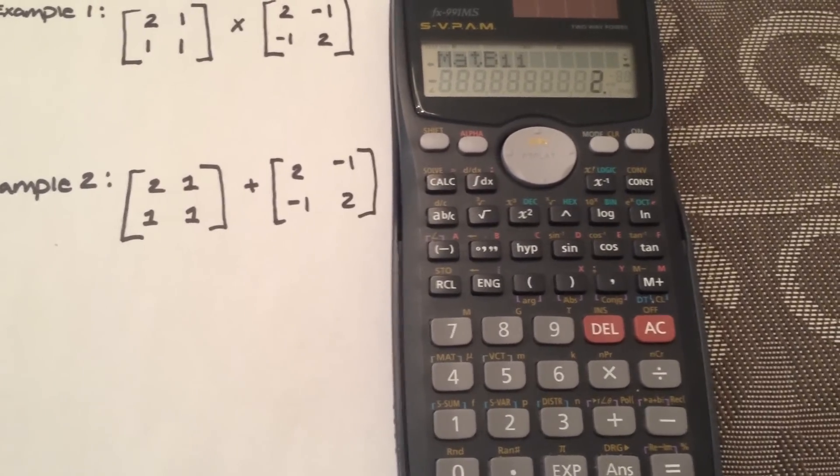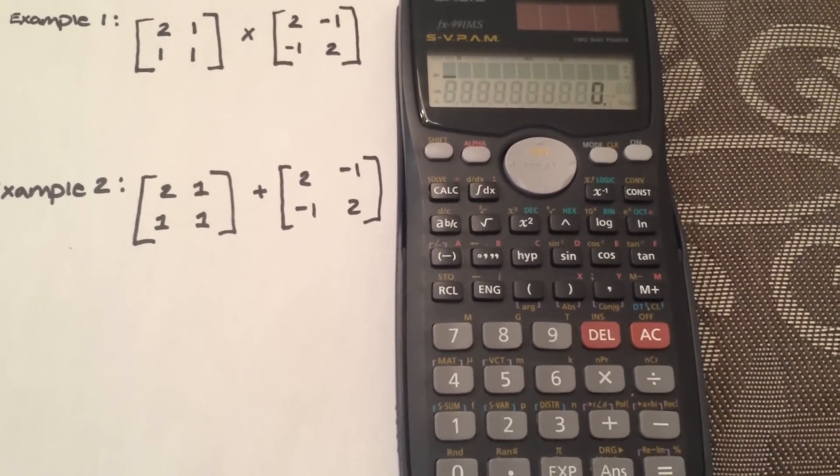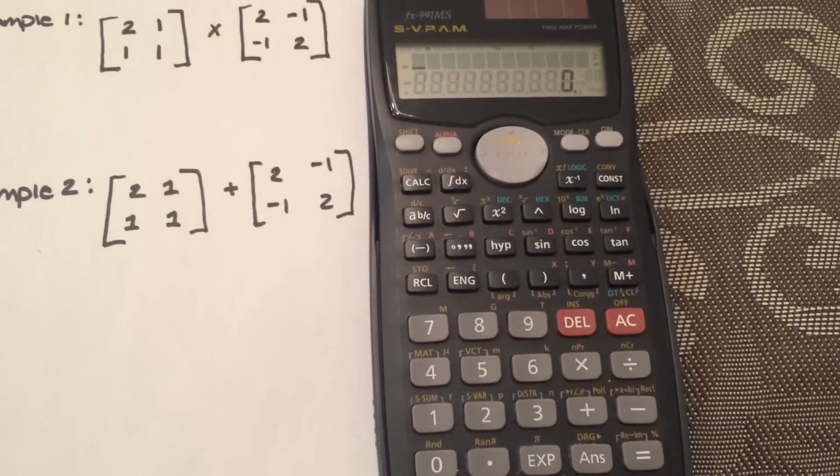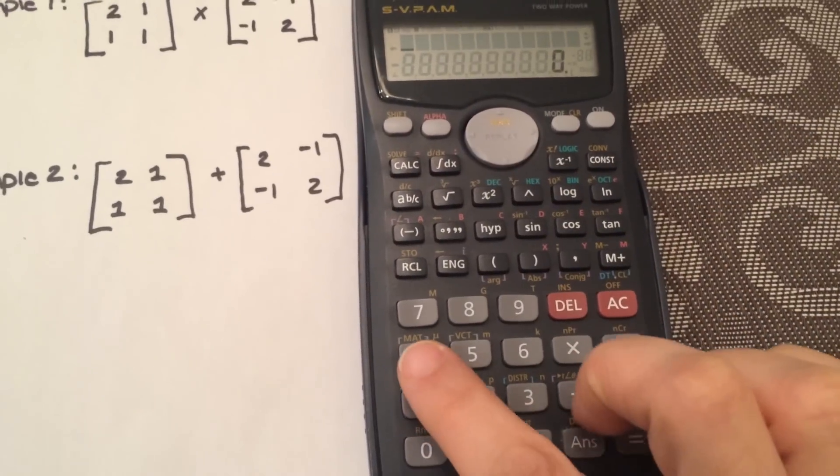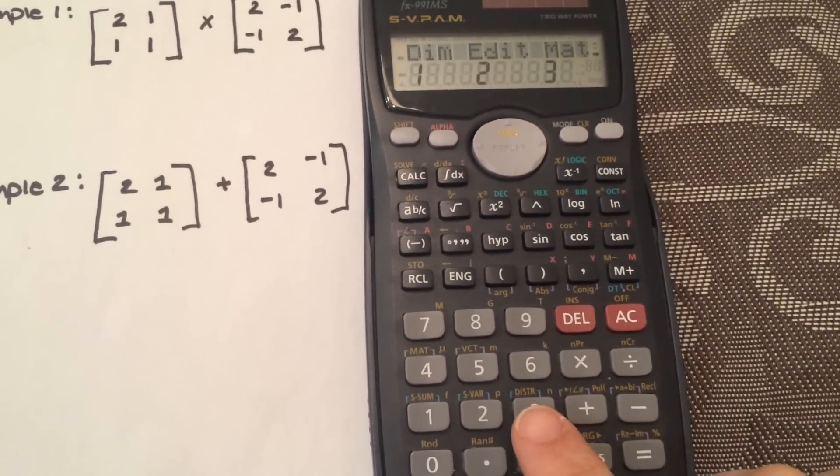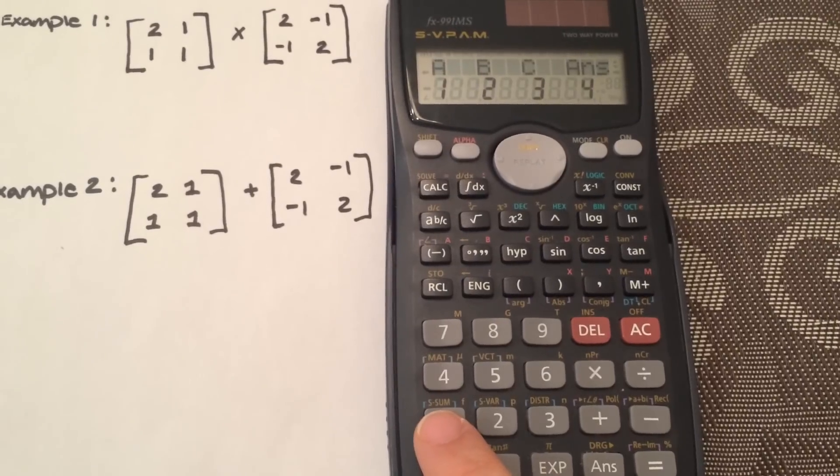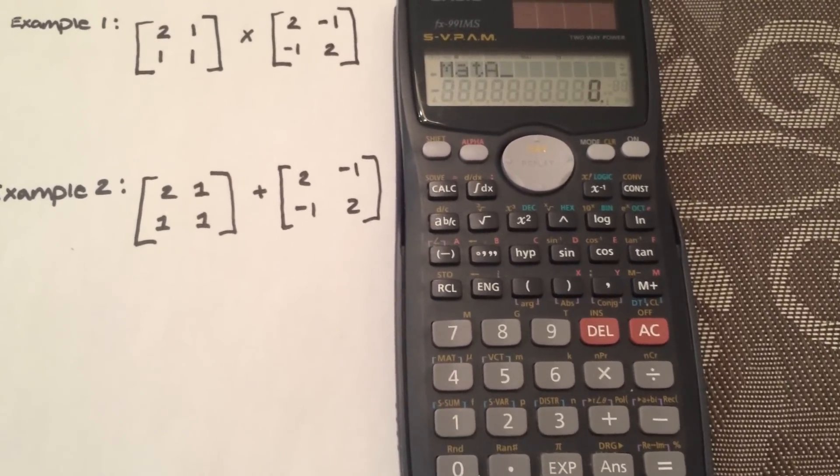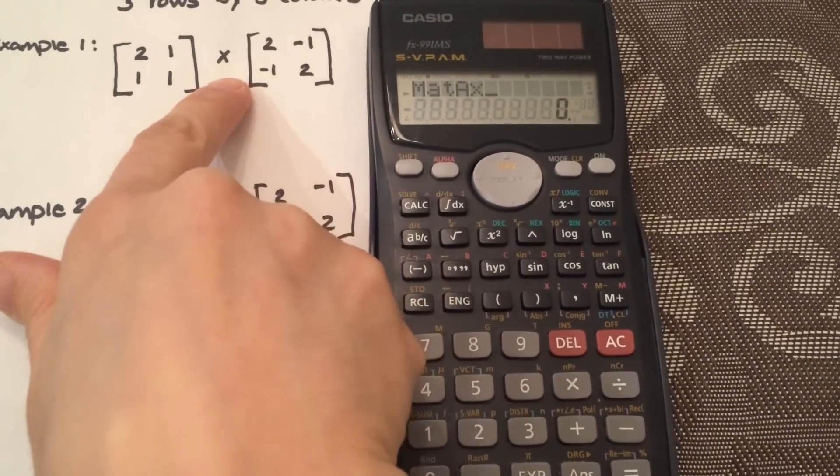So hit clear. Now you're going to go to shift 4. You're going to select 3 for matrices. And now we want to select matrix A, so the first one we call matrix A, which is 1. Then we're going to hit multiply, because over here we're trying to multiply it.